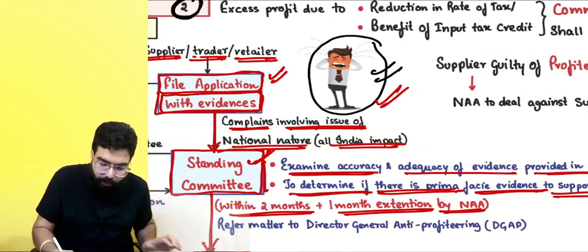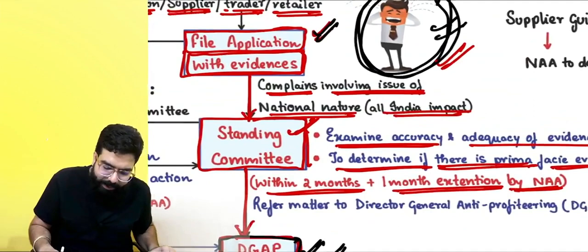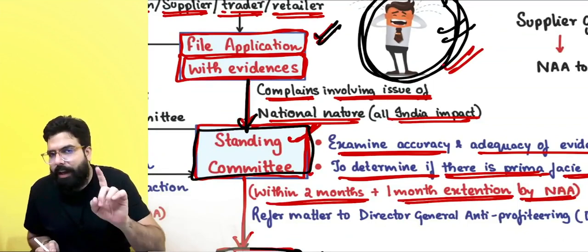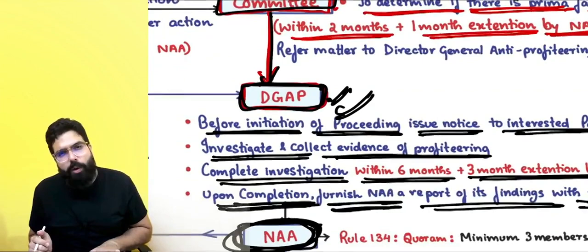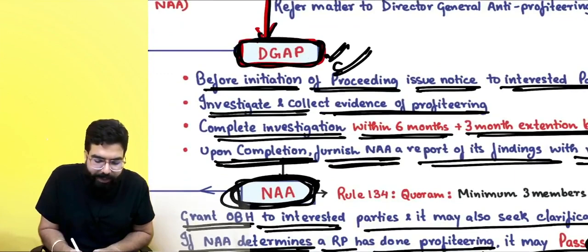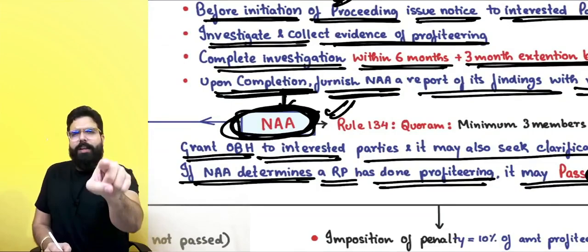The National Anti-Profiteering Authority will grant an opportunity of being heard to the interested party and can also seek clarification from the DGAP. If NAA determines that the registered person has done profiteering, it will go ahead and pass an order within six months.